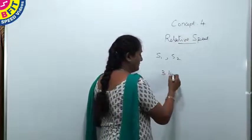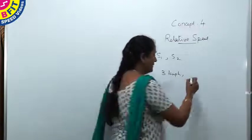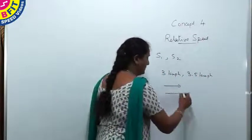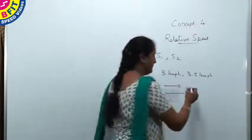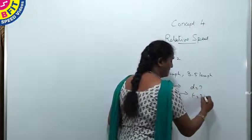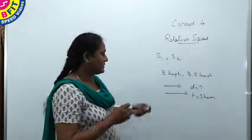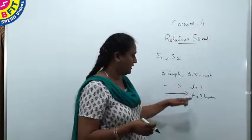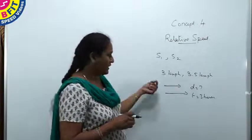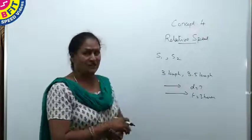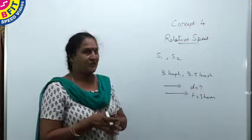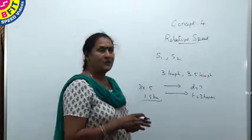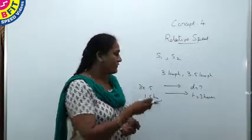For example, two persons walk at 3 km/h and 3.5 km/h in the same direction. What will be the distance between them after 3 hours? In one hour, the faster person covers 0.5 kilometers more than the other. So after 3 hours the distance between them is 3 × 0.5 = 1.5 kilometers. Based on this relative speed concept, we can work out all such problems.